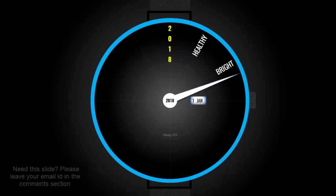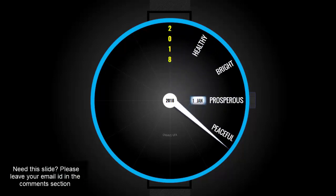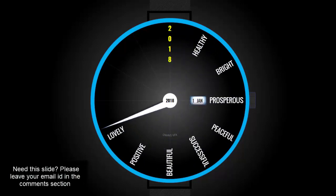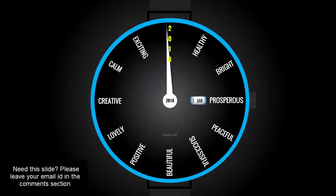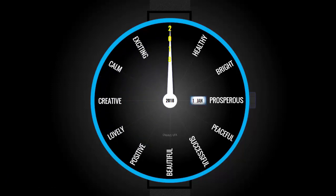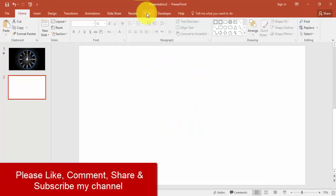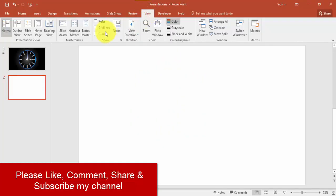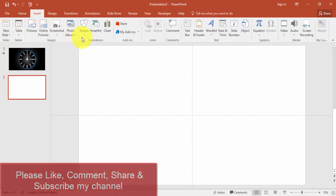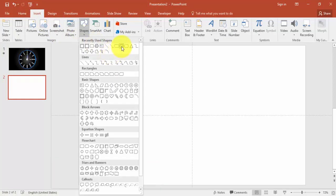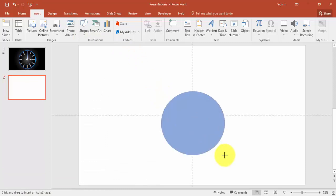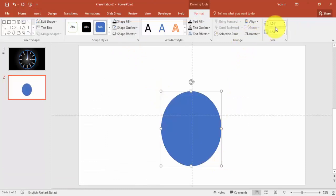Hello and welcome to my YouTube channel OSVFX. Today I'm going to show you how to design this awesome looking clock for 2018 resolution. So let's start — enable the guides under View, and go to Insert Shapes, select Oval, and give height and width as six inches.